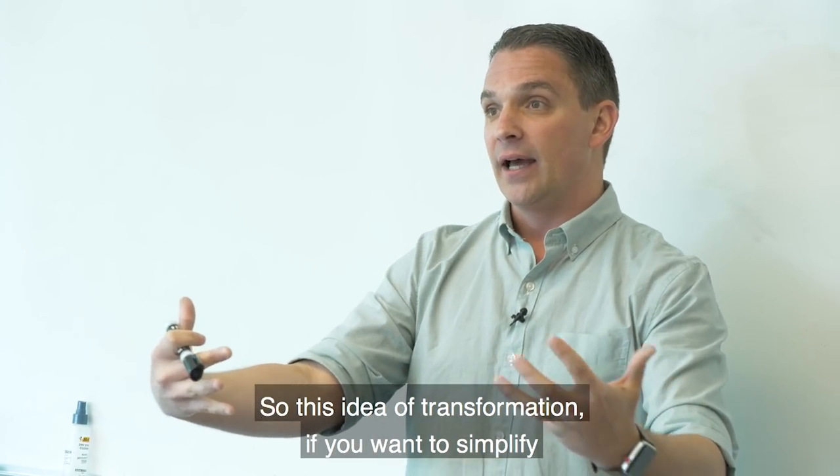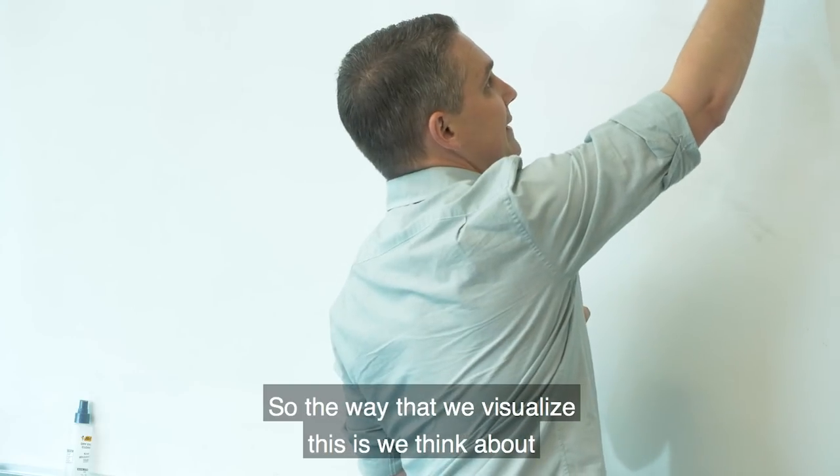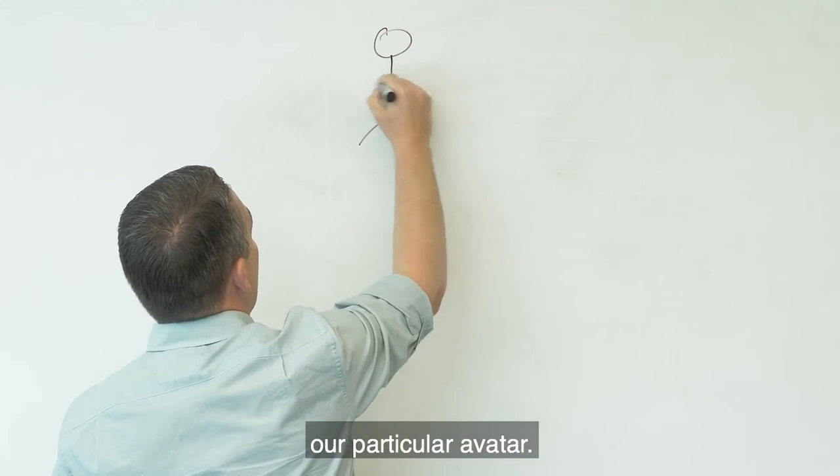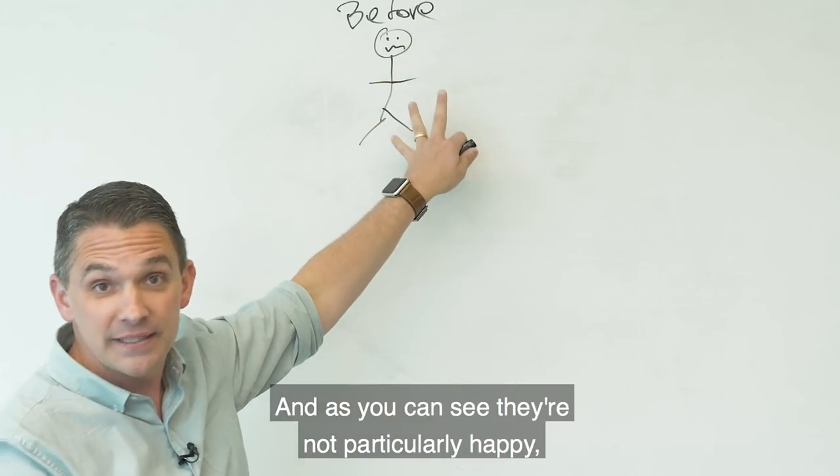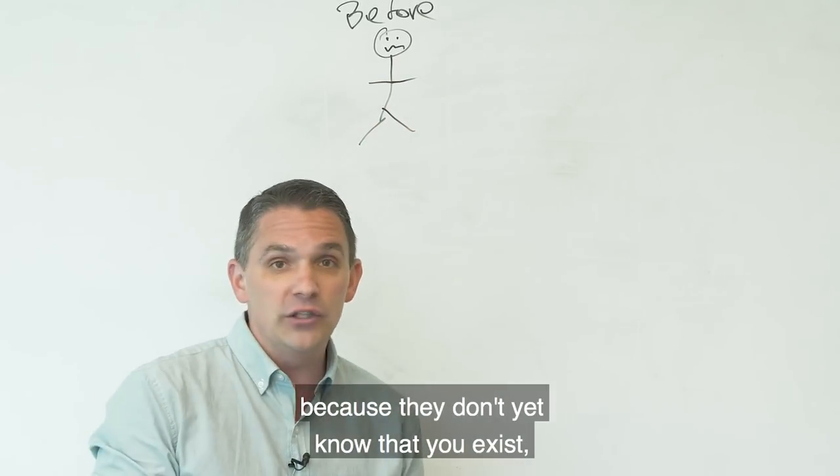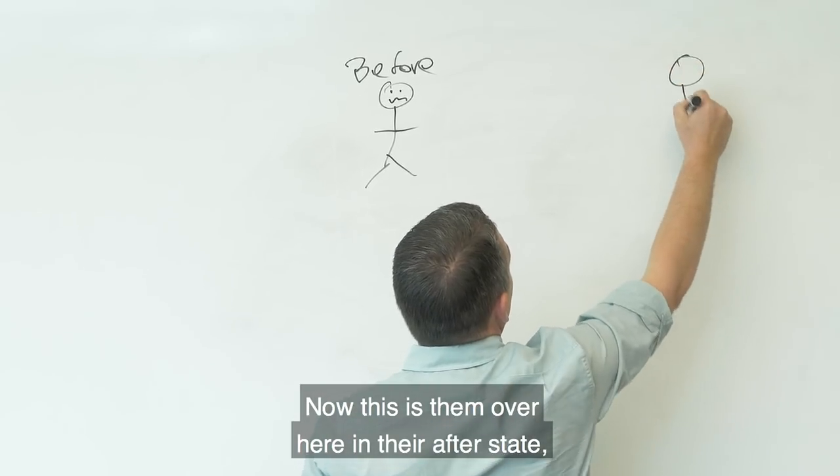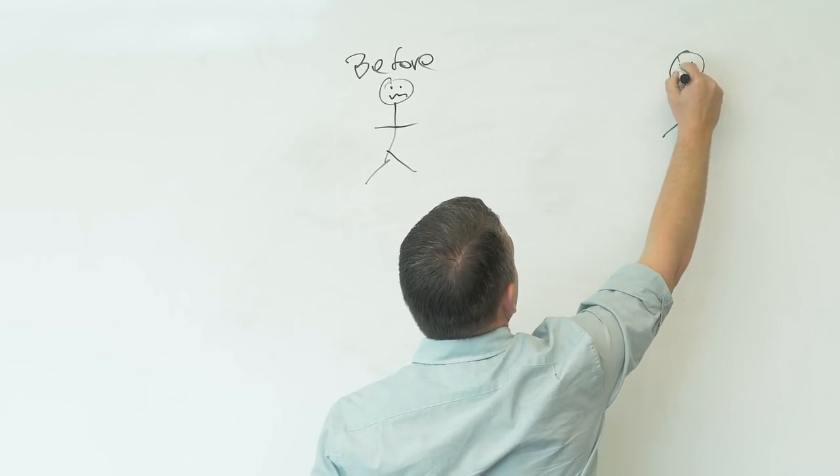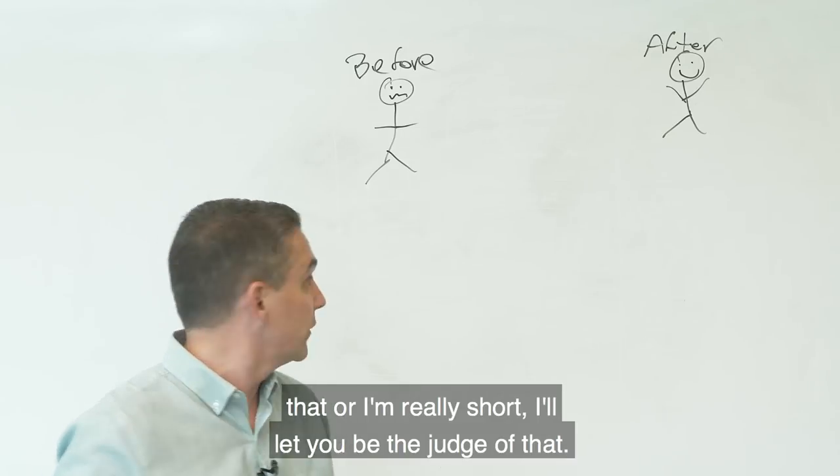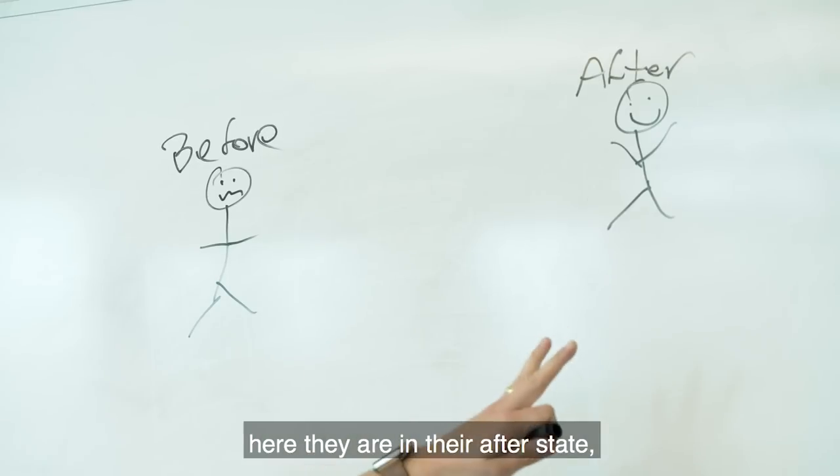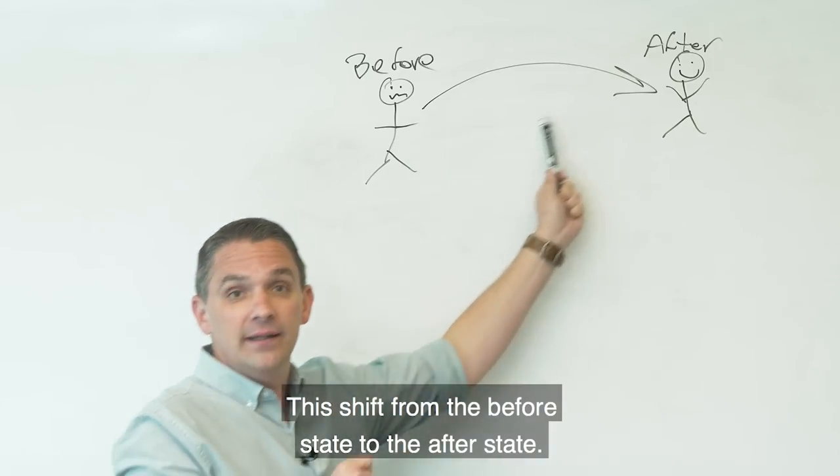So this idea of transformation, if you want to simplify copywriting, we just need to learn to start speaking more transformationally. So the way that we visualize this is we think about our particular avatar. And in this case, this is Mr. or Mrs. Before. And as you can see, they're not particularly happy. They're not particularly thrilled with life because they don't yet know that you exist. They've got a problem and they don't have the solution that is your product or service. Now, this is them over here in their after state. You can see now they're thrilled. Having to go up on my tippy toes because this whiteboard's really tall. That or I'm really short. I'll let you be the judge of that. But here they are in their before state. Here they are in their after state.